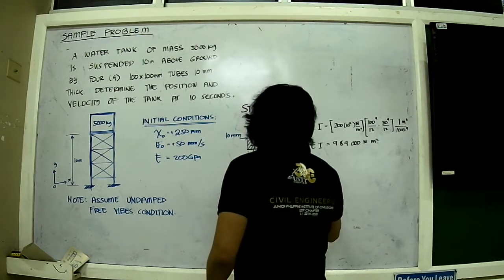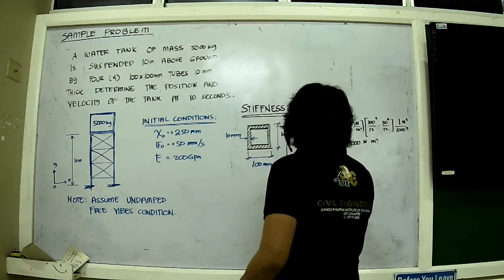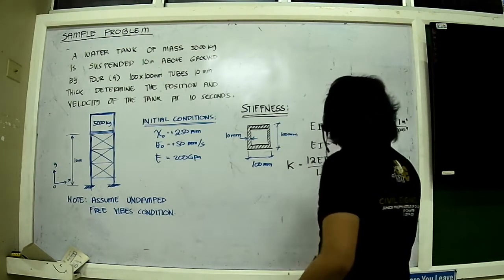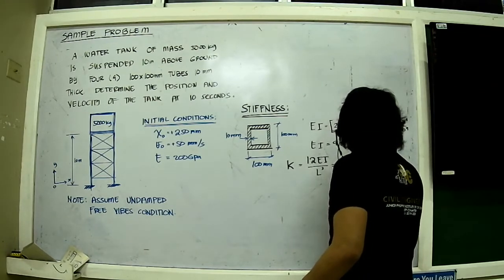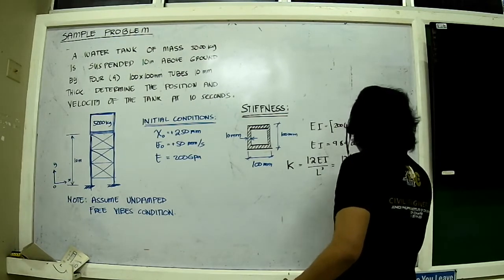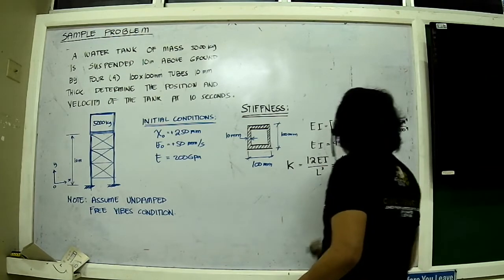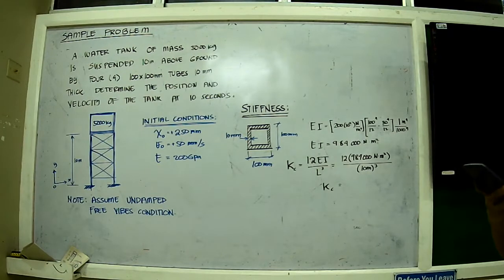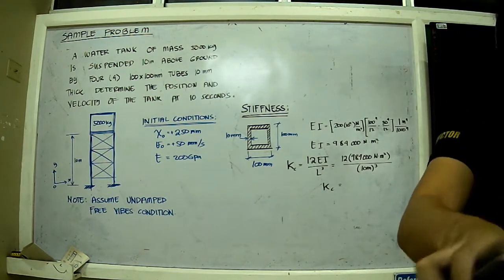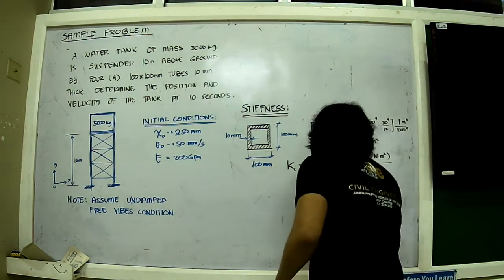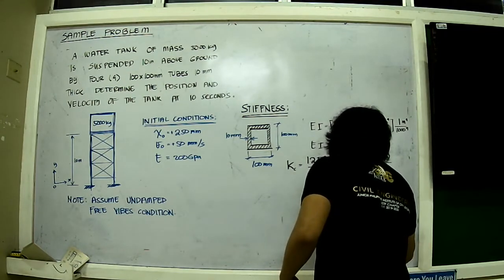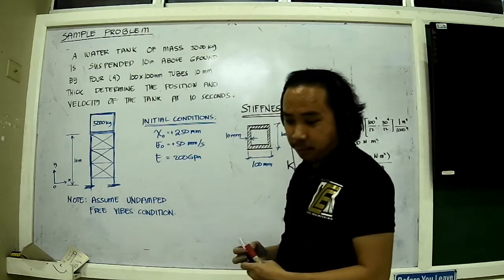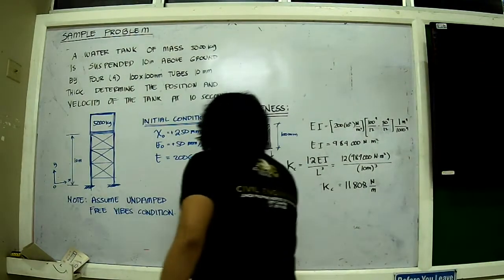From there, we go to K. K per column is equal to 12 EI over L cubed, and that should be equal to 9,840,000 divided by L which is equal to 10 cubed. So K per column is equal to 11,808 Newton per meter.